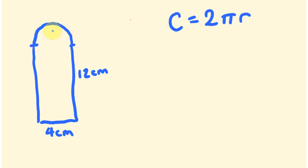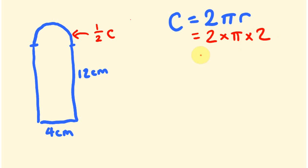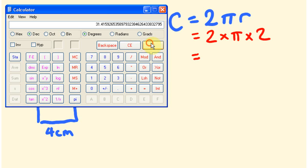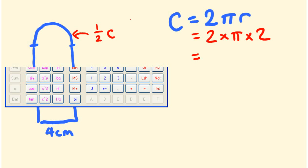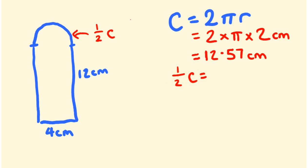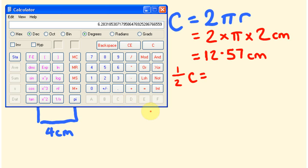We're going to be using circumference to work all this out. What we have here is a half circumference, so this one is half of the circumference. Circumference equals 2πr. The diameter is 4, so the radius is going to be half of that, which is 2. So the circumference equals 2 times pi times 2. On the calculator: 2 times pi times 2 equals 12.57 centimetres. Half of C equals 12.57 divided by 2, which equals 6.28 centimetres.